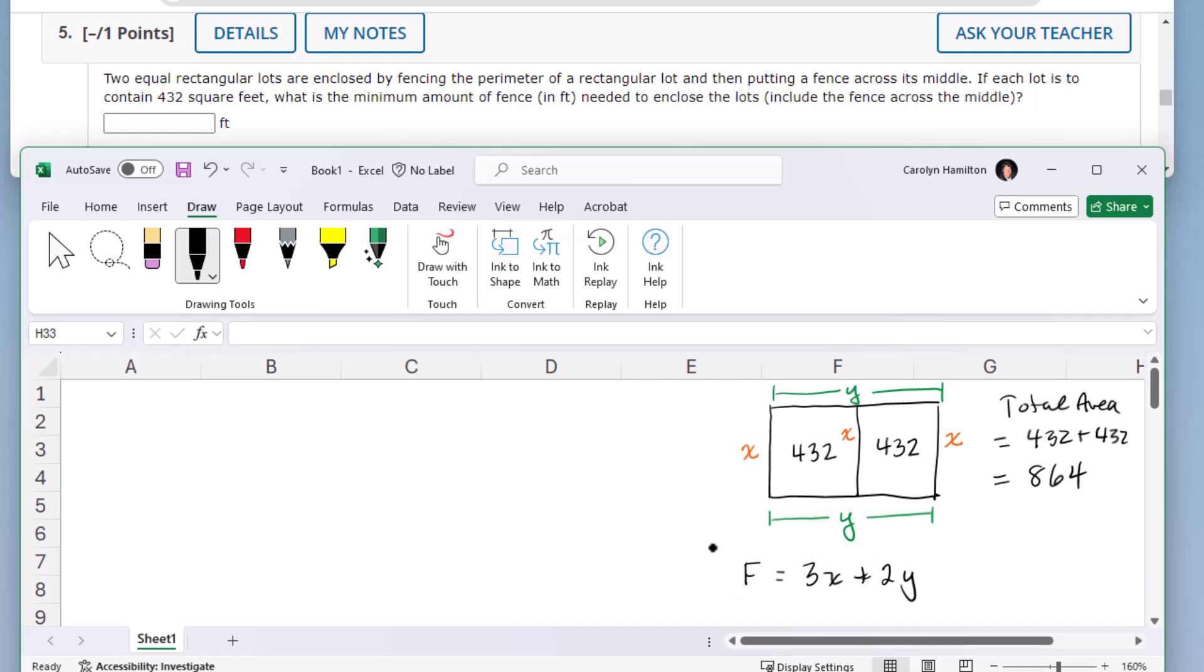And this is what I want to minimize is the fencing. So if I think about this with regard to Excel, for the fencing, I need three x's and two y's, which then means that I need to have an x and a y. But I need to know how those two things interrelate,